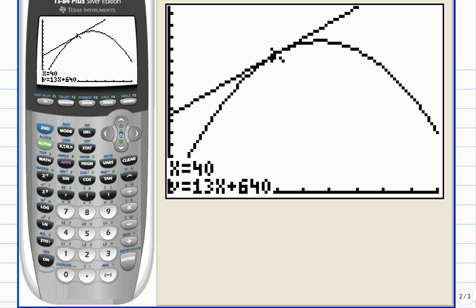There, it positions the cursor on the graph right at x equals 40, draws the tangent line, and displays the equation of the tangent line in slope intercept form. Pretty cool, huh? Notice the slope - in fact, that's right, it's 13, just what we said the derivative is.